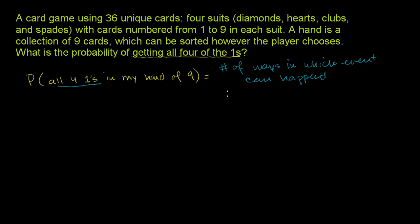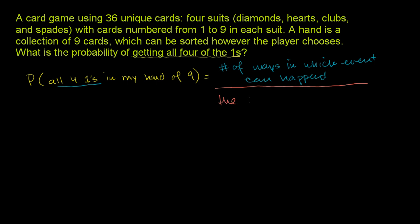And all of these different ways, that's sometimes called the event space. But we actually want to count how many ways that if I get a hand of nine, picking from 36, that I can get the four ones in it. So this is the number of ways in which my event can happen, and we want to divide that into all of the possibilities — the total number of hands that I can get. So the numerator is the number of different hands where I have the four ones, and we're dividing it by the total number of hands.